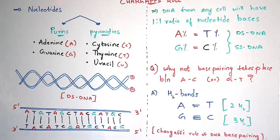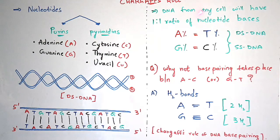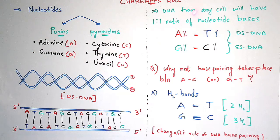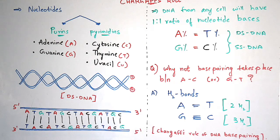Now let us discuss Chargaff's rule. The DNA from any cell will have a 1:1 ratio of nucleotide bases. For example, whether you take DNA from humans, animals, or plants like maize or wheat, the nucleotide content will always be in a 1:1 ratio. That means the percentage of adenine will be equal to the percentage of thymine, and the percentage of guanine will be equal to the percentage of cytosine. However, adenine will not be equal to cytosine, and guanine will not be equal to thymine.